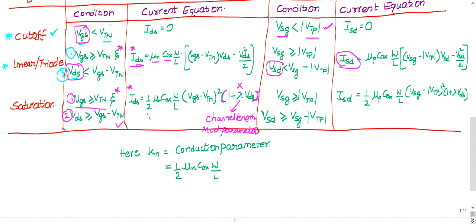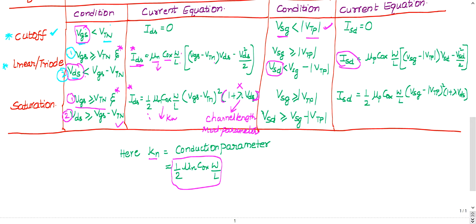In our question, KN is given. KN is the conduction parameter, which equals ½·μnCOX·(W/L). So in the saturation current formula, half·μnCOX·(W/L) is simply KN, and in the linear formula it becomes KN as the prefactor. This is the key substitution for KN.